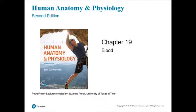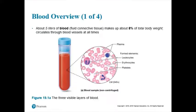Welcome to chapter 19 of Anatomy and Physiology. In this chapter, we finish off the cardiovascular system by looking at the tissue that your heart and blood vessels are moving around your body. We're going to look at blood.